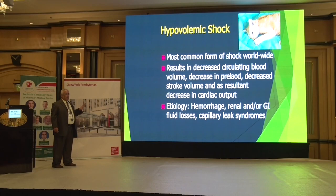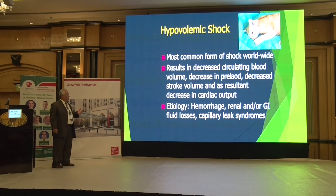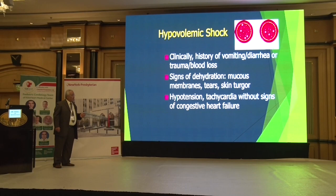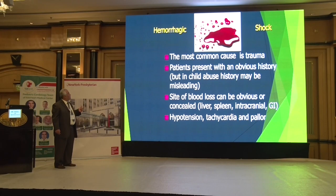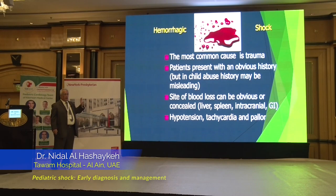The most common cause of shock worldwide is hypovolemic shock — decreased circulating blood volume leads to decreased preload, decreased stroke volume, decreased cardiac output. Etiology includes renal losses, GI losses, hemorrhage, fluid loss, and capillary leak syndrome. History: gastroenteritis, diarrhea, vomiting, polyuria. Signs: sunken anterior fontanelle, absent tears, dry lips, dry tongue, dry mucous membranes, weak pulses, hypotension, tachycardia, tachypnea, and sometimes congestive heart failure.